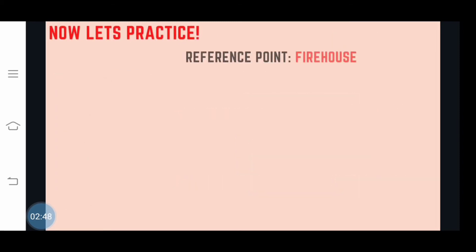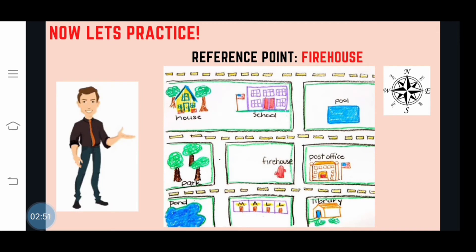Now let's practice. Use the secondary directions in finding the places in the community. The pool is blank of the firehouse — that's correct, it's northeast. The house is blank of the firehouse — that's correct, it's northwest. The band is blank of the firehouse — that's correct, it's southwest.